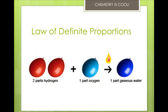Dalton's atomic theory led directly to the law of definite proportions. It states that each compound has a specific ratio of elements, and it is a ratio by mass. For example, water is always 8 grams of oxygen for every gram of hydrogen. Looking at the periodic table, oxygen weighs about 16 atomic mass units and hydrogen weighs one atomic mass unit each, so we can arrive at the formula H2O that way.